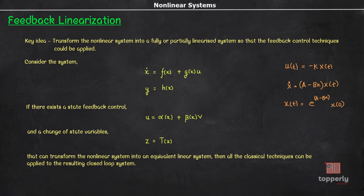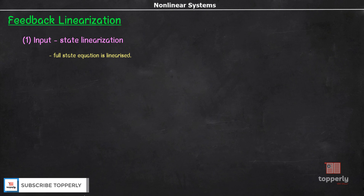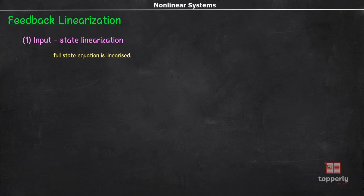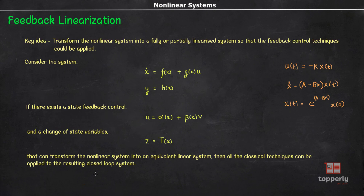Coming to our topic, feedback linearization can be possible in two forms. The first one is input-state linearization, where the full state equation is linearized — that is, the goal is to cancel out the nonlinearities in f and g so that the state equation is in linear form. The second form is input-output linearization, where the emphasis is on linearizing the input-output map from u to y, even if the state equation is only partially linearized.